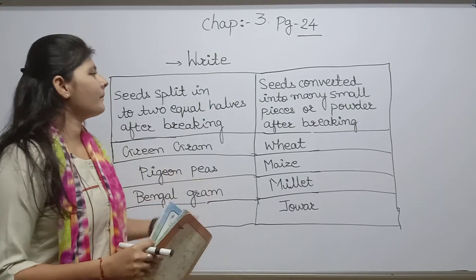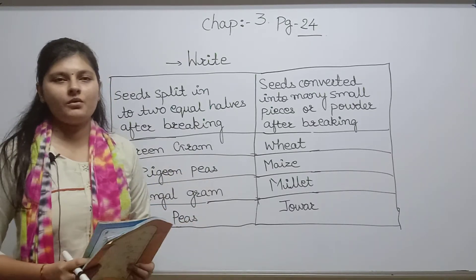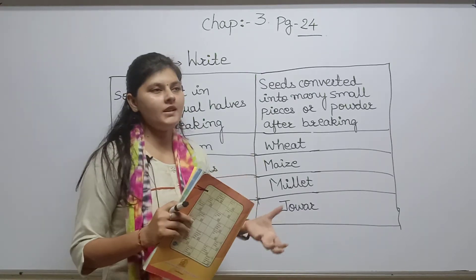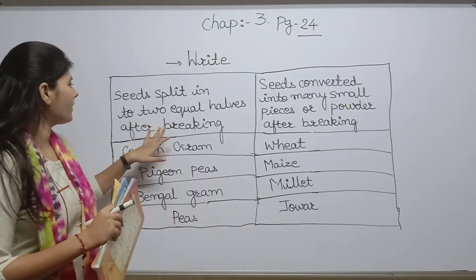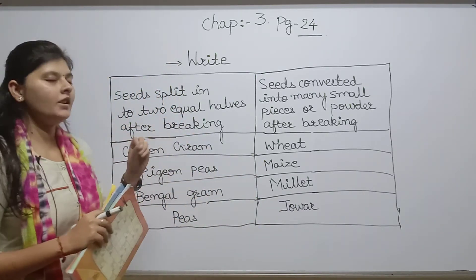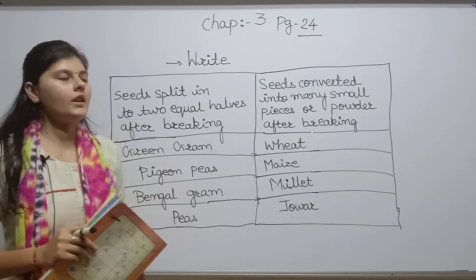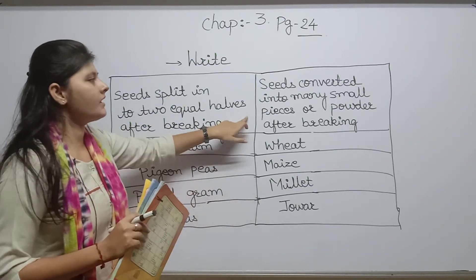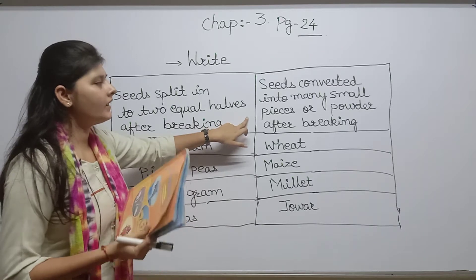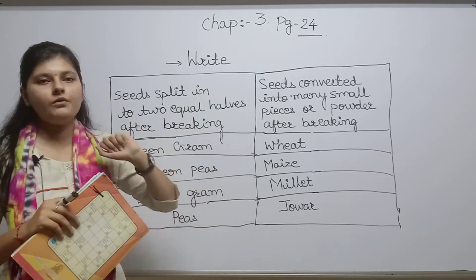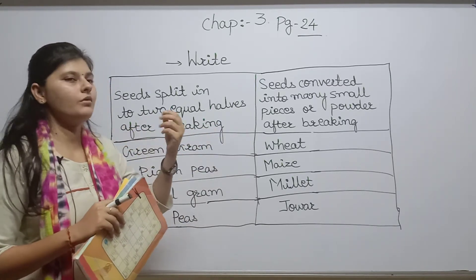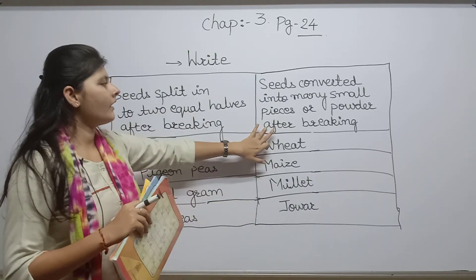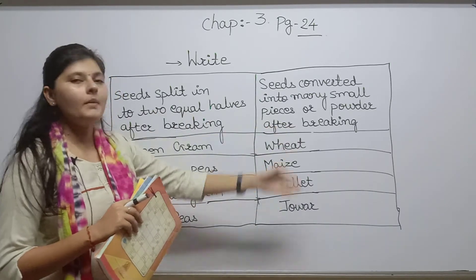Hello and I am back with part 2. In the previous video we discussed about seeds — seeds which split into two equal halves when we break them. Some seeds are so small that if you try to break them, they get converted into small pieces or into a powder.